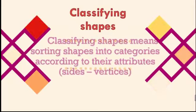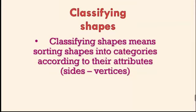What's the meaning of classifying shapes? Classifying shapes means that we are going to group or sort the shapes into groups according to their attributes. For example, if I have many shapes and they all have four sides, I can put them in a group and name it 'shapes that have four sides.' Or if they are all blue, I can name the group 'blue shapes.' So I will sort shapes that have the same attributes into one group.